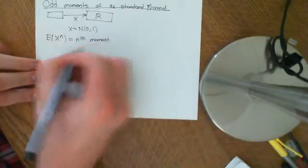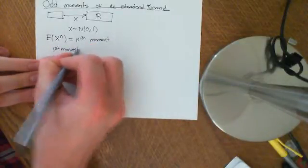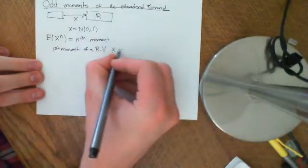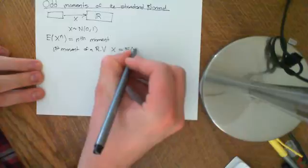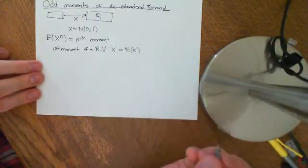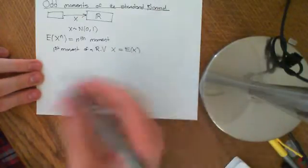So the first moment of a random variable x is equal to E of x. The second moment of a random variable x is E of x squared. The third moment of a random variable x is E of x cubed, etc.